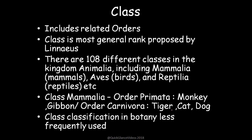Class comes after phylum and is much more specific. This was a more general rank originally proposed by Linnaeus. There are 108 different classes in the kingdom Animalia, including Mammalia for mammals, Aves for birds, and Reptilia for reptiles. Within class there are orders like Primates — monkeys and gibbons — and Carnivora — tigers, cats, dogs. Class classification is less used in botany and more used in Animalia.